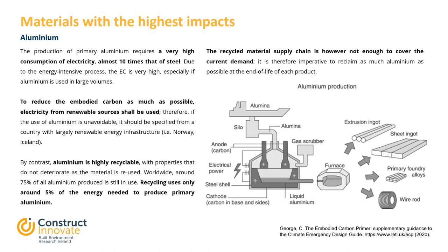The production of primary aluminium requires a very high consumption of electricity — almost ten times that of steel. Due to this energy-intensive process, the embodied carbon is very high, especially if aluminium is used in large volumes. To reduce embodied carbon as much as possible, electricity from renewable sources should be used in the manufacture of aluminium. Therefore, if the use of aluminium is unavoidable, it should be specified from a country with large renewable energy infrastructure such as Norway or Iceland. By contrast, aluminium is highly recyclable with properties that do not deteriorate as the material is reused. Worldwide, around 75% of aluminium produced is still in use. Recycling uses only around 5% of the energy needed to produce primary aluminium. However, the recycled material supply chain is not enough to cover current demand, so it is imperative to reclaim as much aluminium as possible at end of life.